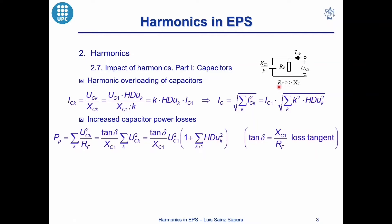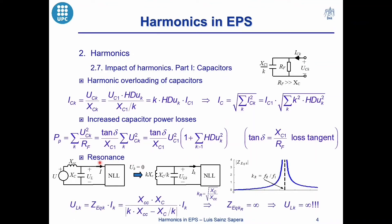The equivalent circuit of a capacitor has a resistance of high value connected in parallel with the capacitor. The losses in this resistance are the sum of the harmonic voltage squared divided by the resistance. By using the loss tangent of the capacitor, we can observe that the losses depend on the harmonic content of the supply voltage. Broadly speaking, the loss tangent is small because the resistance is high, and the losses in a capacitor are also small. The third effect on capacitors related to harmonics is the resonance phenomenon.